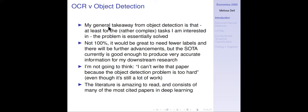I'm not going to say it's 100% solved because it would be great to need fewer labels, and there will be advancements, but the state of the art is currently good enough to produce very accurate information for downstream research. The literature is amazing — it consists of many of the most cited papers in deep learning.